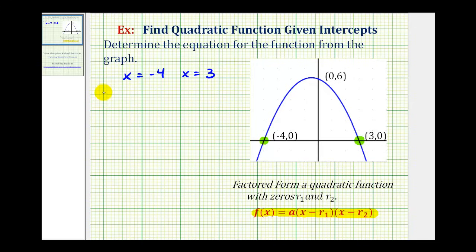So if our function in factored form is f of x equals a times the factor of x minus r sub one, times the factor of x minus r sub two, we can substitute negative four for r sub one, and positive three for r sub two.